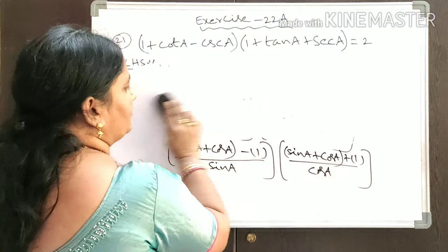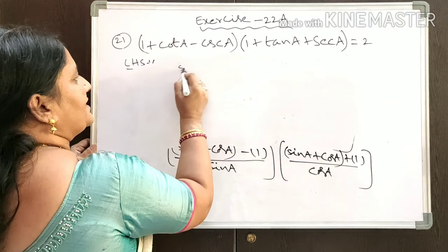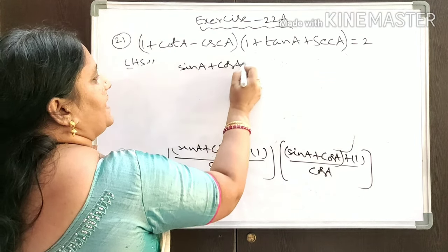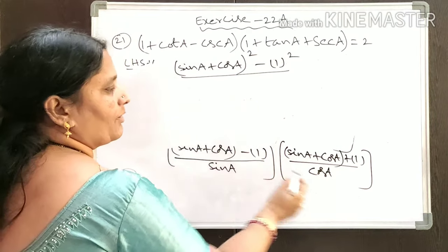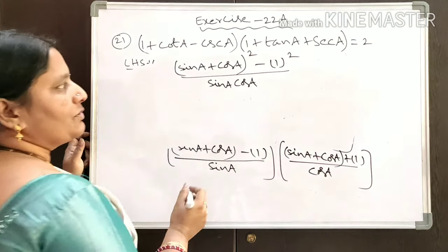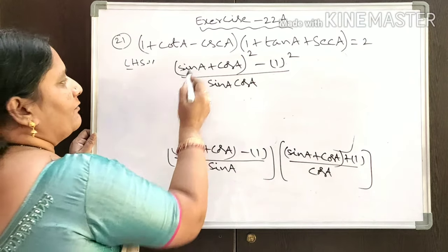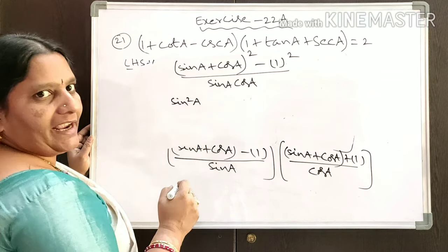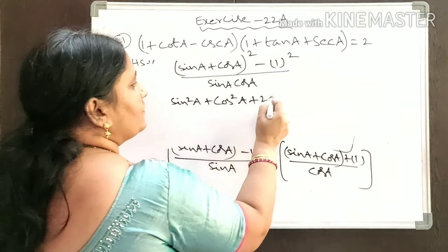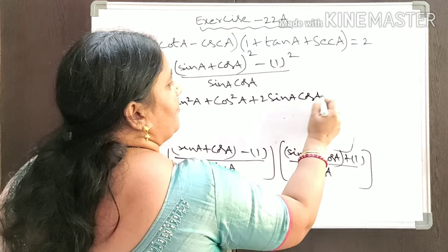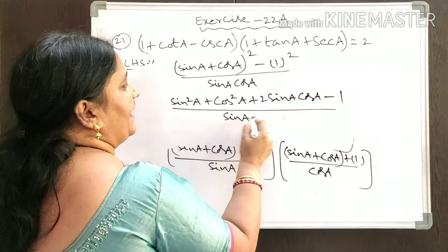Applying A² - B², the numerator becomes (sinA + cosA)² - 1², with the denominator being the product sinA·cosA. Expanding (sinA + cosA)² gives sin²A + cos²A + 2sinA·cosA, minus 1, all over sinA·cosA.